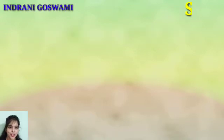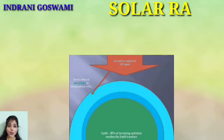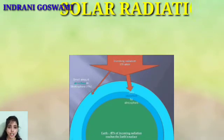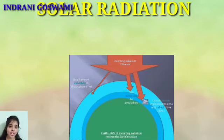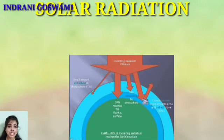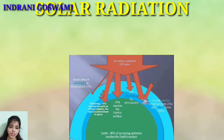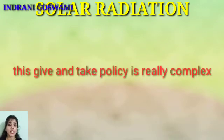Now, what is solar radiation? The sun continuously radiates heat and light in all directions — this is known as solar radiation. Here, 'radiates' means the sun gives heat and light in all directions. The process of taking heat from the sun and giving that heat back to space is really complex in nature.